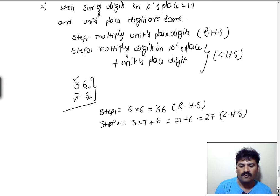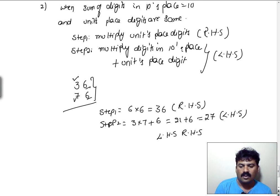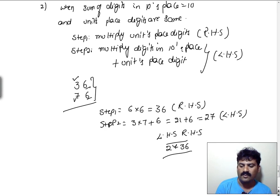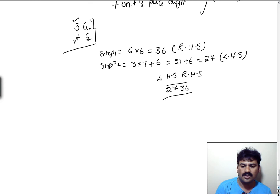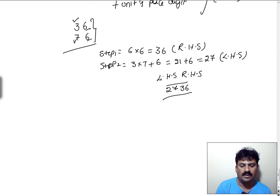Finally, combining the LHS part and RHS part: 27 and 36 — this is the final answer for the multiplication 36 into 76.